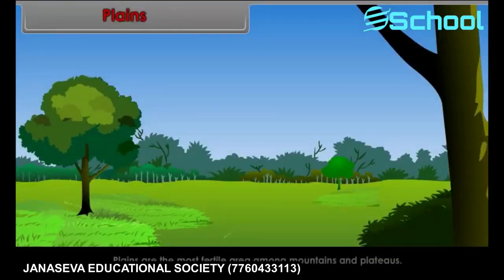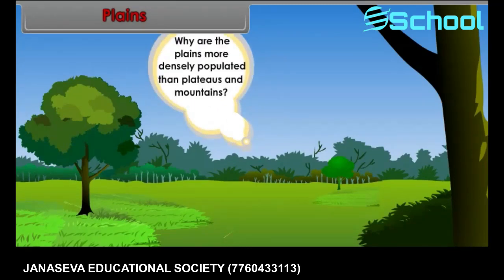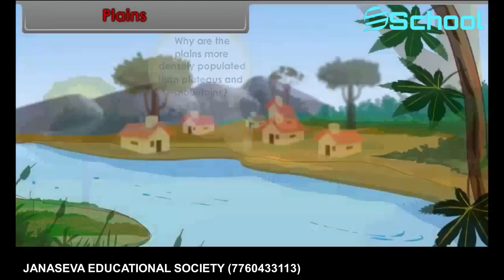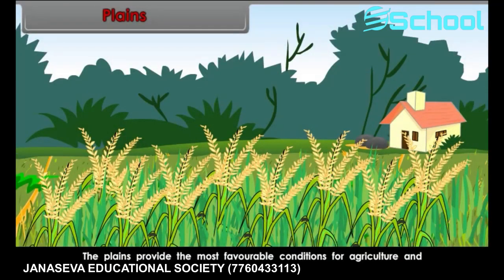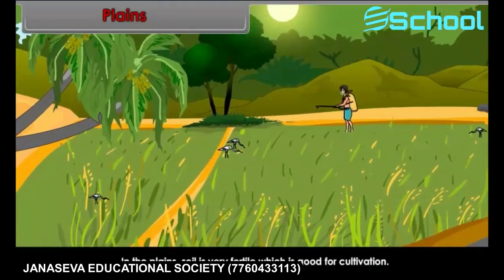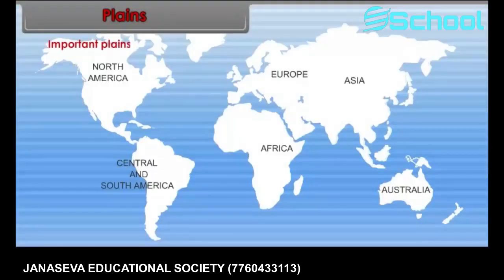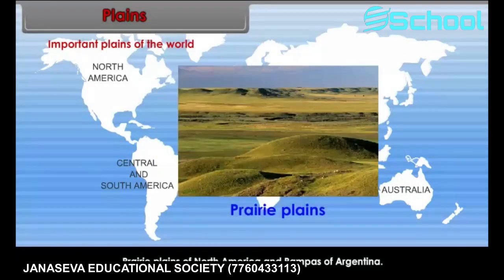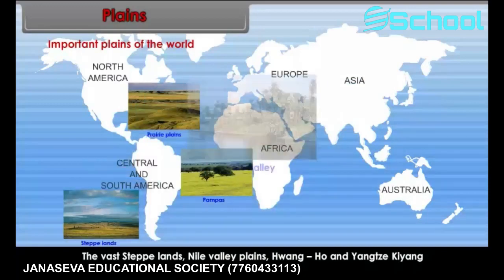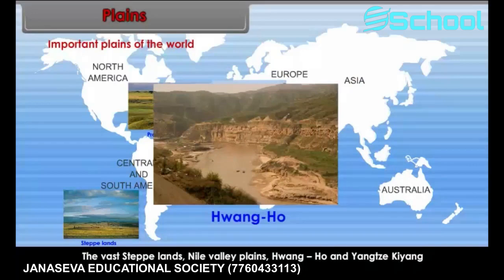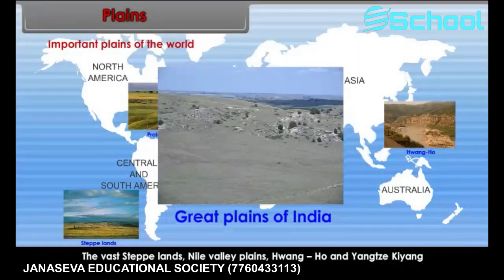Plains are the most fertile area among mountains and plateaus. Why are the plains more densely populated than plateaus and mountains? Because most of the plains are drained by rivers and they are the cradles of human civilizations. In the plains, soil is very fertile, which is good for cultivation. Some of the important plains of the world are the Prairie Plains of North America, Pampas of Argentina, the vast steppe lands, Nile Valley Plains, Quangho and Yangtze-Kiang Plains, and the Great Plains of India.